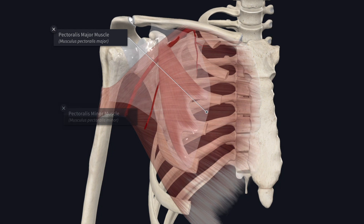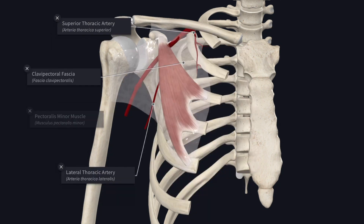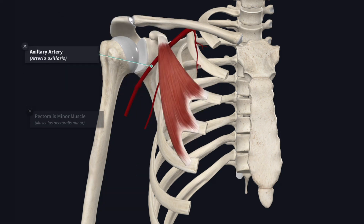Here you can see the pectoralis major muscle, which lies in front of the pectoralis minor muscle. The upper border of the muscle gives attachment to the clavipectoral fascia and is accompanied by the superior thoracic artery. Along the lower border it gives attachment to the suspensory ligament of the axilla, accompanied by the lateral thoracic artery. The axillary artery is subdivided into three parts by the pectoralis minor muscle.